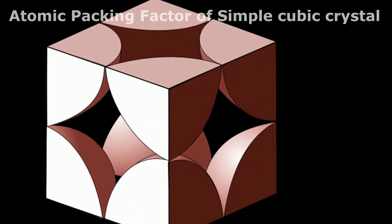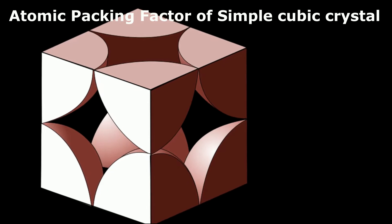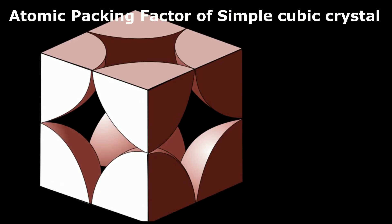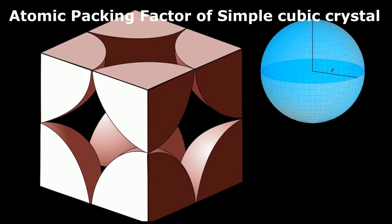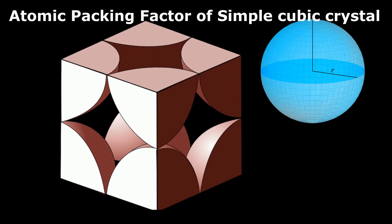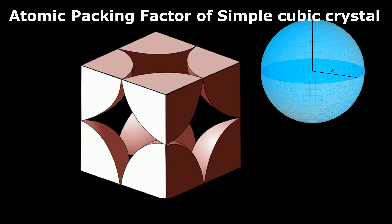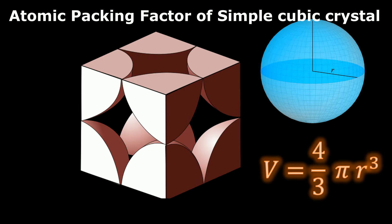This is the unit cell of a simple cubic crystal. If we combine all the pieces of atoms together, it will form a single atom. So there is only one atom in the unit cell. We will consider the shape of the atom to be spherical. And the volume of this spherical atom is equal to 4 by 3 pi r cube.